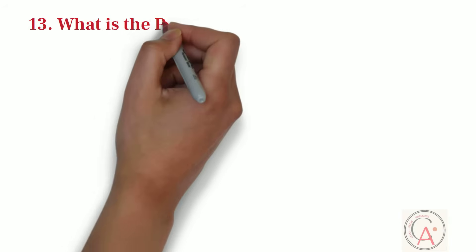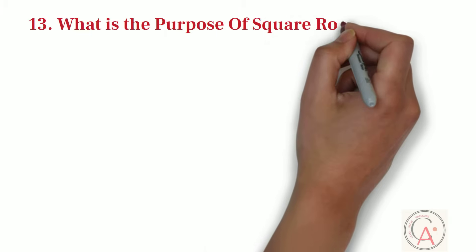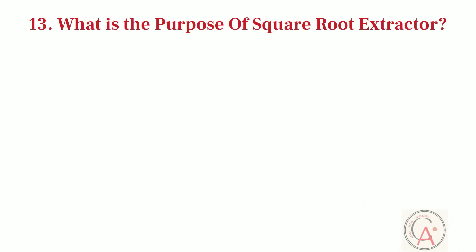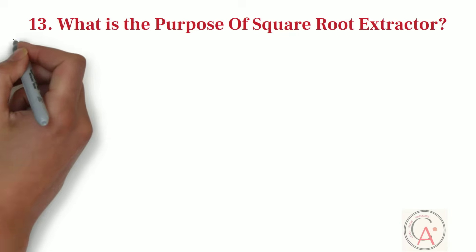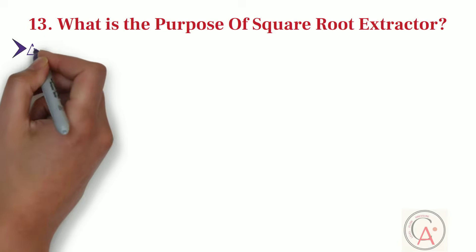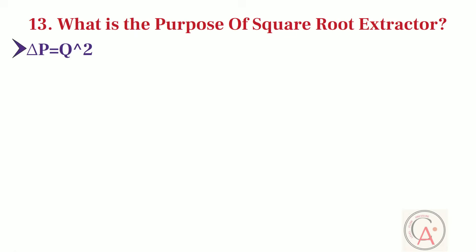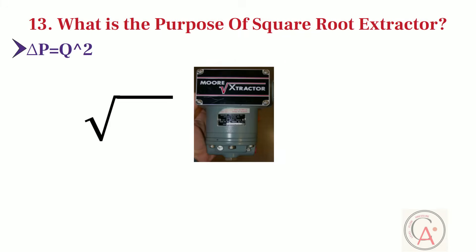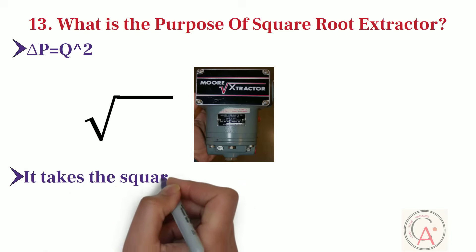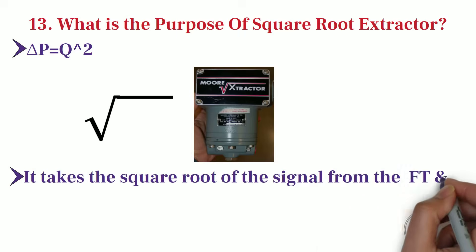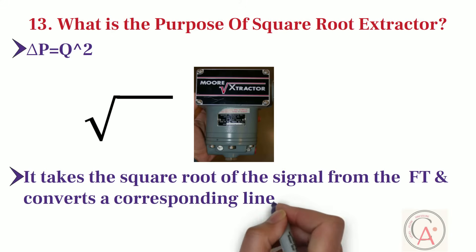One of the most important and basic technical question is, what is the purpose of square root extractor in DPT? As we know that differential pressure developed by a venturi, orifice plate, pitot tube, or any other acceleration-based flow element is proportional to the square of the flow rate. Square root extractor is a function or device which takes the square root of the signal from the flow transmitter and converts to corresponding linear flow signal.